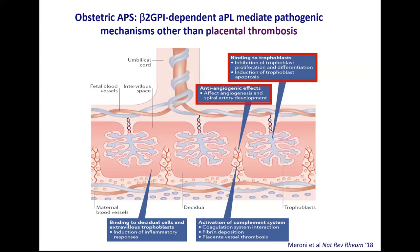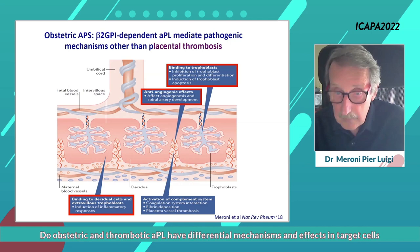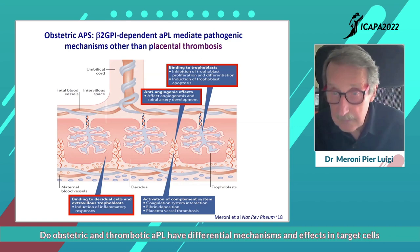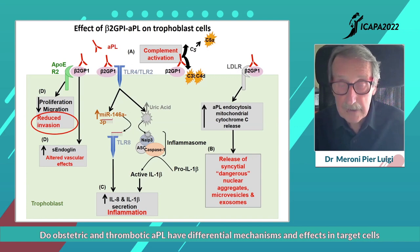The story of APS in the placenta is a little different from what we see in the vessels. The antibodies can also recognize beta-2 on the decidual cells and extravillous trophoblasts, and the binding of the antibodies and complement activation can induce a local inflammatory response. While the antibodies once bound can activate the complement system and cross-talk with coagulation — and we can find some fibrin deposition around the villi as well as some placenta vessel thrombosis — thrombotic events are not the main pathogenic manifestation.